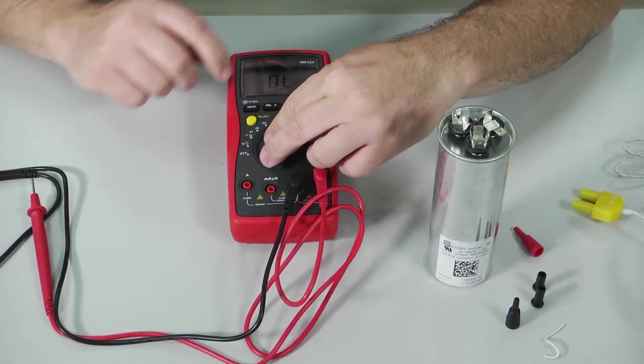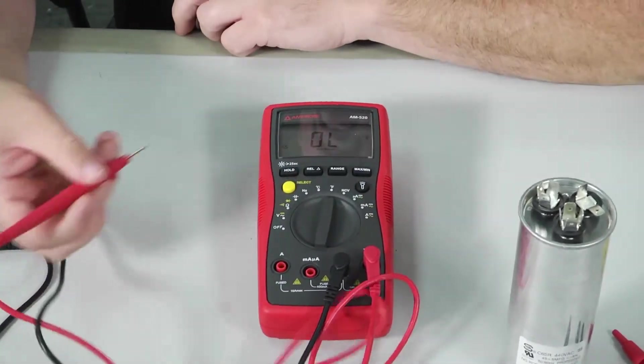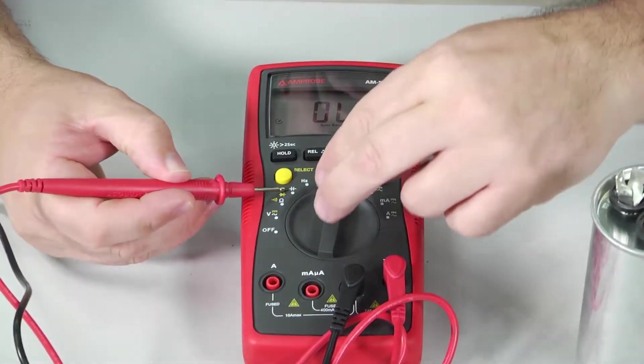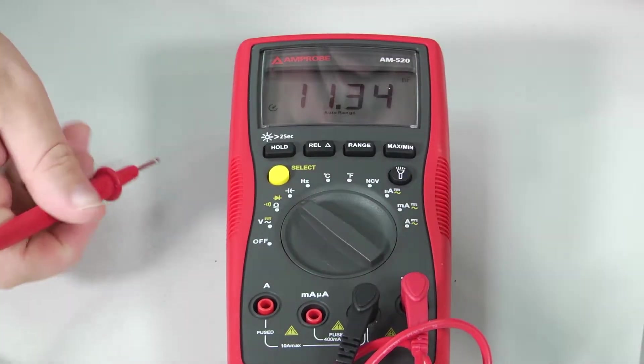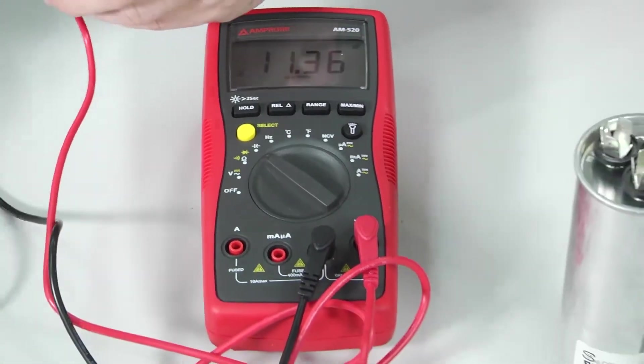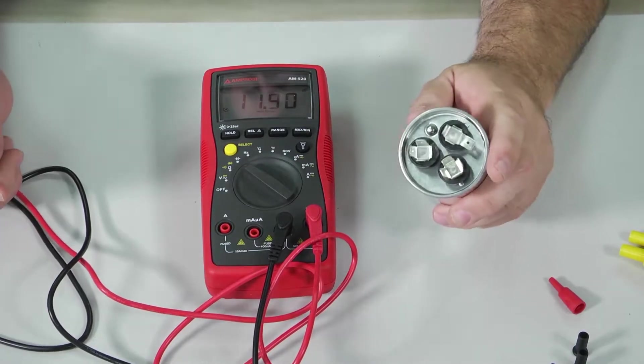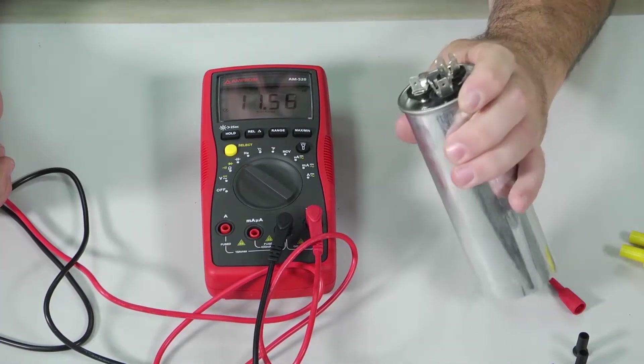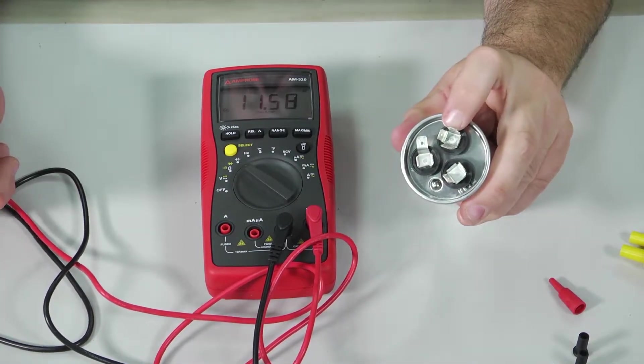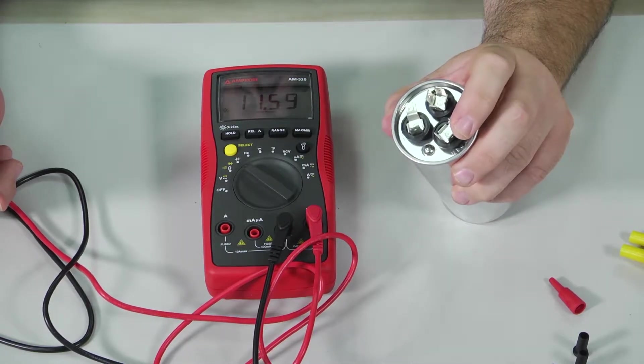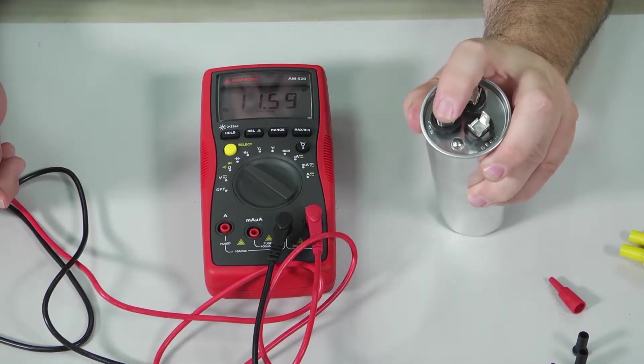Now switch it over to the capacitance tester which is this symbol here, the universal symbol for a capacitor. Let's take our leads and go across two terminals of the capacitor. Now this is a dual capacitor so we have a common terminal here, one terminal here, herm for the hermetic compressor, one here for the fan.